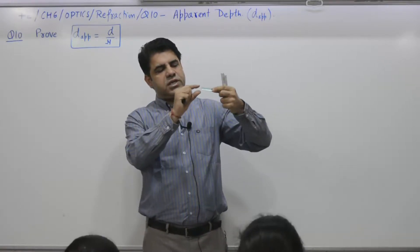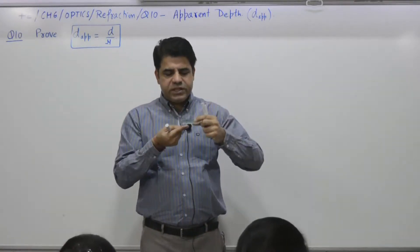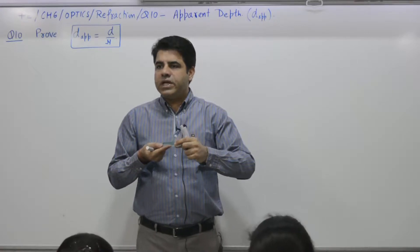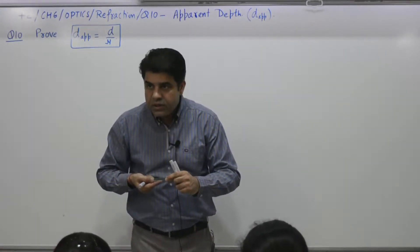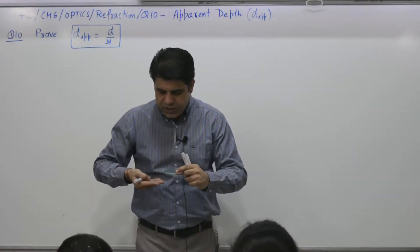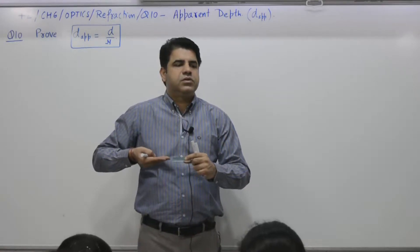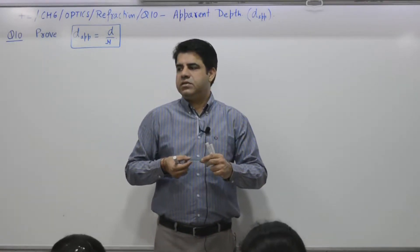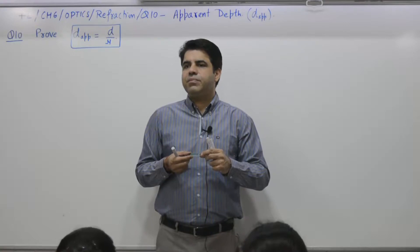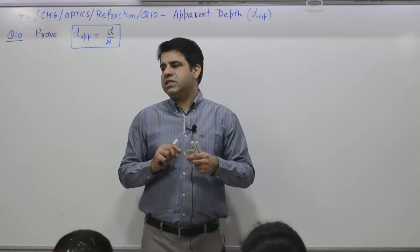Similarly here, suppose thickness is one centimeter. You place a coin here, if you place a coin and see it from the top, it appears to be raised. So one is actual depth, say one centimeter, second is apparent depth, say 0.8 centimeter.